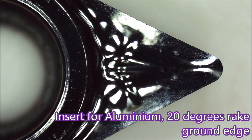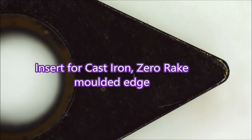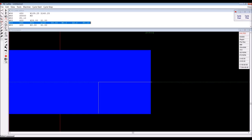There you see an aluminum insert with 20 degrees of rake, ground edge, very sharp. This one's for cast iron, no rake at all, and a molded edge. This is just a simulation of removing material. You can see that line there for the g-code.